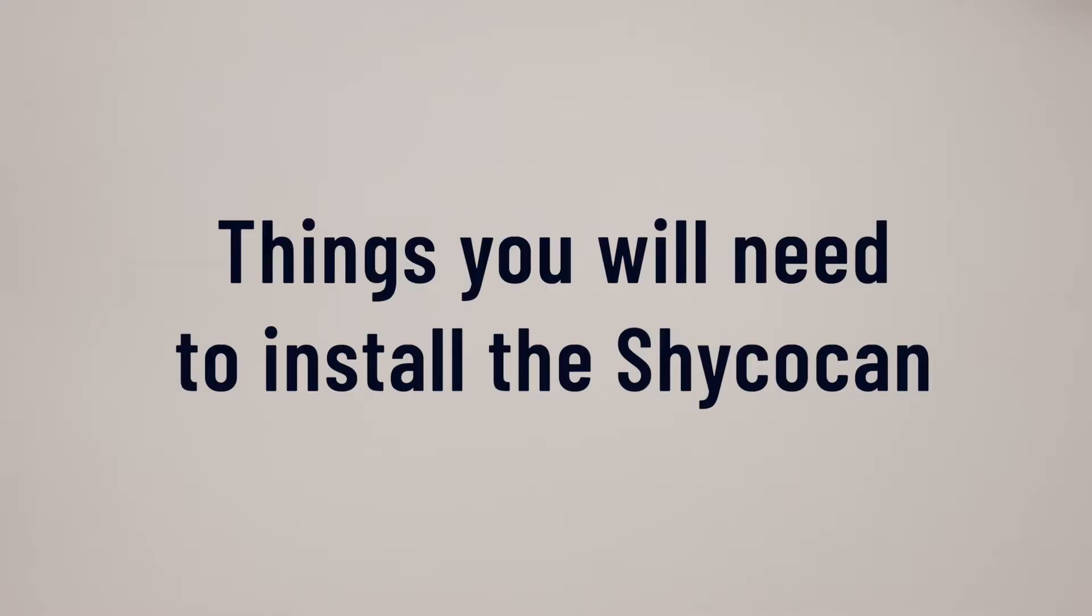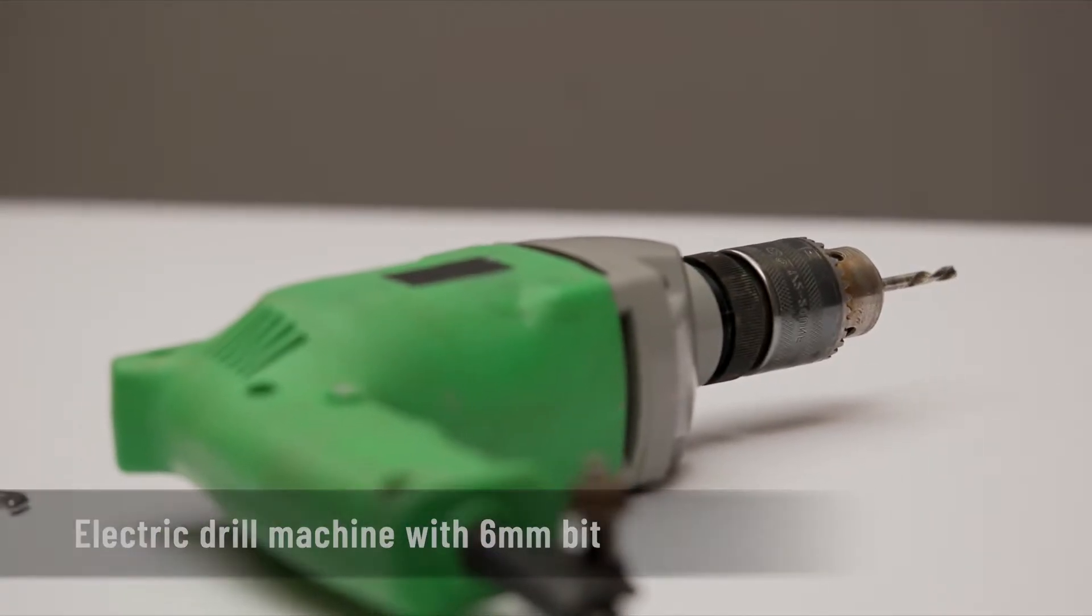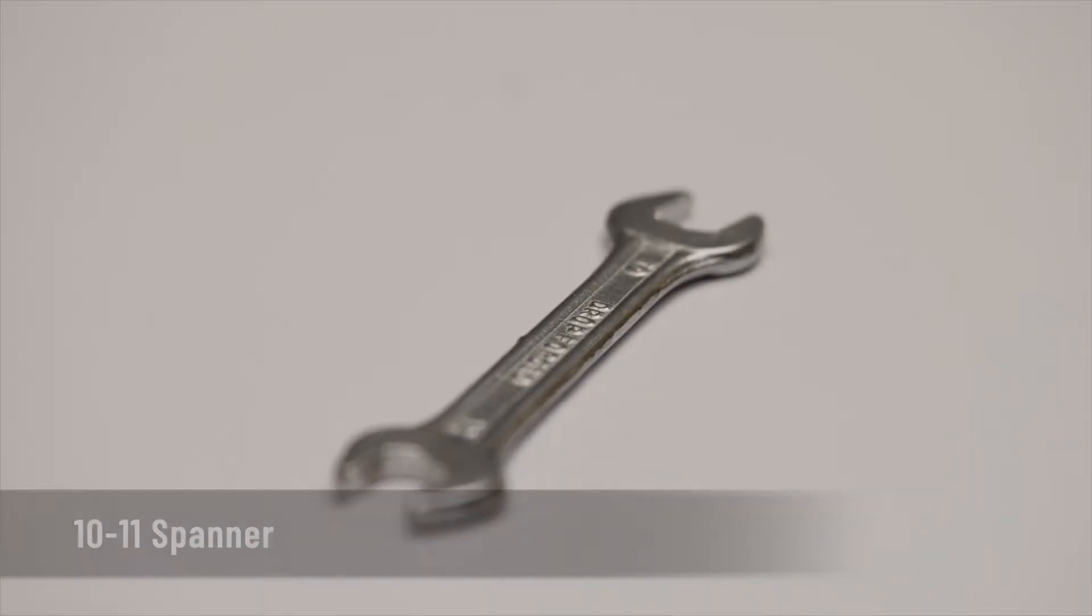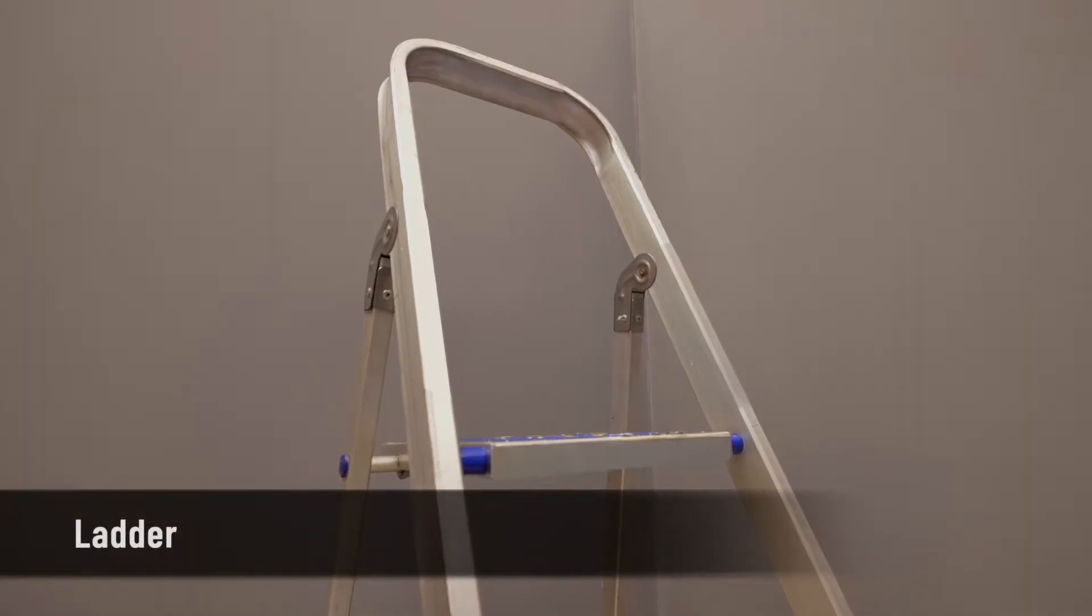We will need the following to get the installation started: a power socket, an electric drill machine, a 10 by 11 spanner, a pencil to mark the drill spots on the wall, and a ladder to install the device at a height.